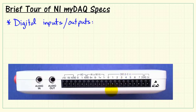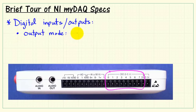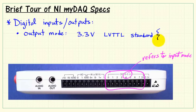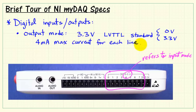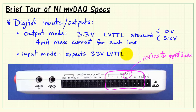Moving on to the digital I/O, or digital inputs and outputs. We have a total of 8. When the connection is set to output mode, it's 3.3 volts, low voltage TTL — that's the standard being used. The 0-5 refers to input mode. For output, it's generating either 0 volts or 3.3 volts, with 4 milliamps maximum current drive for each line. For input mode, it expects the same standard — 0 to 3.3 volts — but the inputs are 5 volt tolerant, which is what the 0-to-5 indicator means.